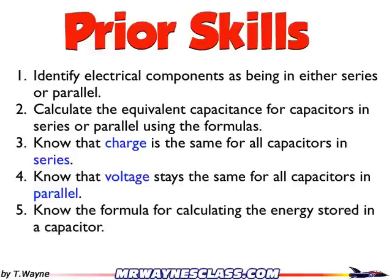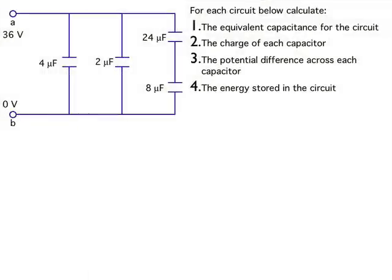And finally, you need to know the formula for calculating the energy stored in a capacitor. So there are four basic steps to doing the complete analysis. You've got to find the equivalent capacitance for the circuit, the charge on each capacitor, the potential difference across each capacitor, and that's the voltage used up by each one, and finally the energy stored in the circuit.